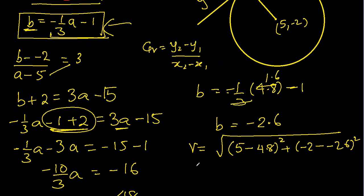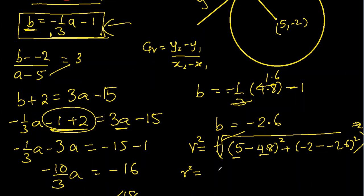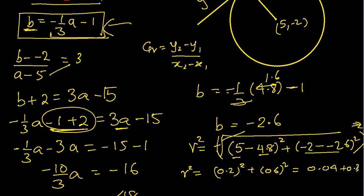We square both sides to get r squared, since the equation of a circle requires r squared. So r squared equals 5 minus 4.8 squared plus minus 2 minus minus 2.6 squared, which is 0.2 squared plus 0.6 squared, giving 0.04 plus 0.36, which equals 0.4. This is r squared.